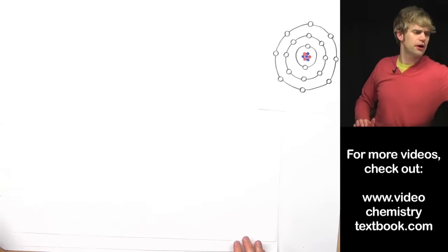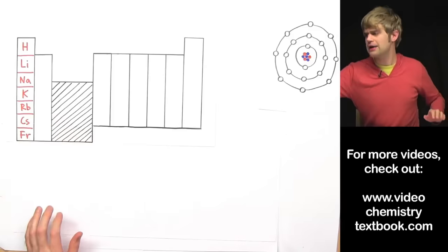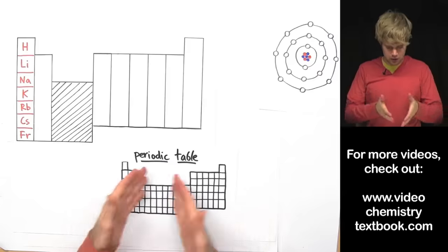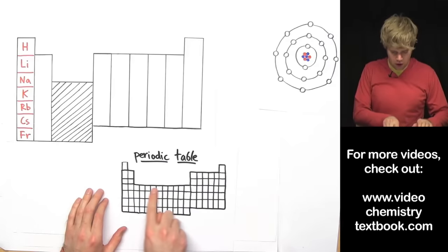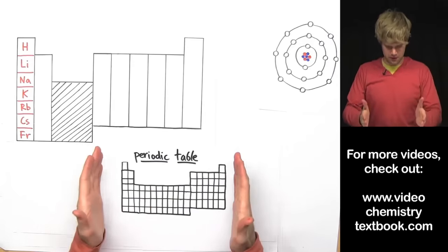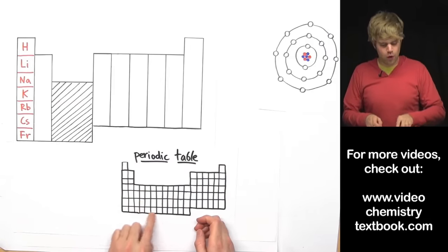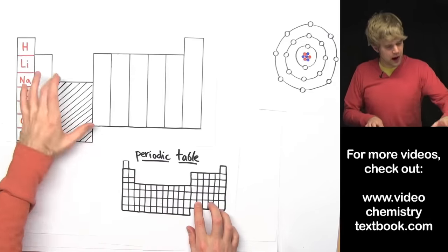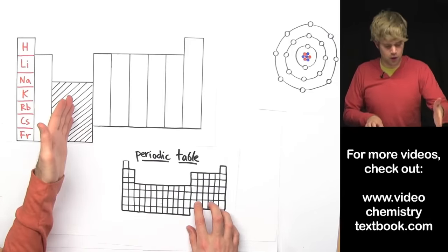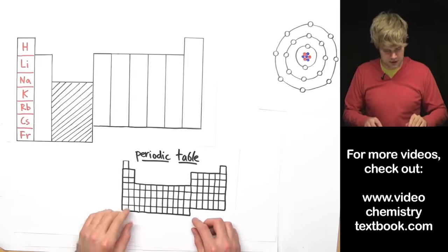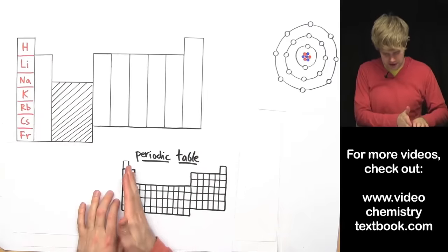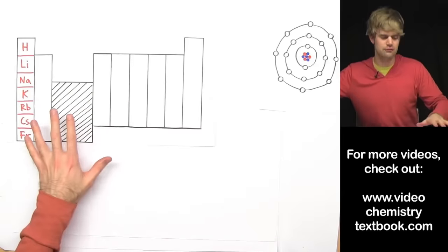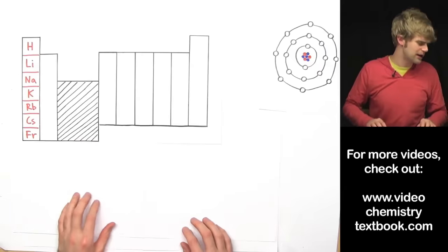We're going to use the periodic table for this, going column by column. I've made a big version of a periodic table that looks a little different than the real version — I've left out all the elements in the middle. We're only going to focus on eight columns: these two on the left, skipping everything in the middle, and then these six on the right. So don't get confused — we're just leaving out some elements we don't want to get into right now.